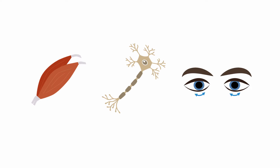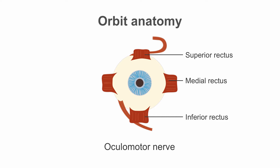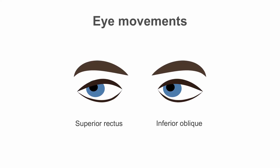Let us review the muscles of the orbit, their innervation, and the eye movements they control. There are six muscles controlling extraocular movements, controlled by three nerves. The oculomotor nerve, cranial nerve 3, controls a majority of the muscles: specifically superior and inferior rectus, medial rectus, and the inferior oblique. The trochlear nerve, cranial nerve 4, controls one muscle — superior oblique. The abducens nerve, cranial nerve 6, also controls one muscle — lateral rectus.